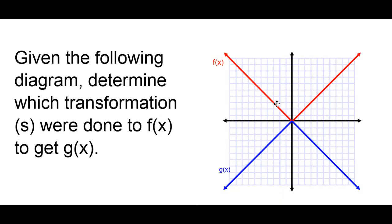So, let's take a look at another example. Given the following diagram, determine which transformations were done to f of x to get g of x. Again, f of x is the red one, and g of x is the blue one. Let's start by looking at transformation. I'm trying to decide, is this a translation? No, it's not slid, because, again, we see our little points line up with each other.